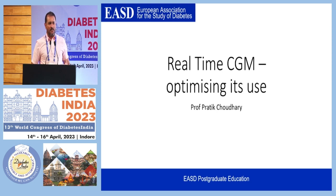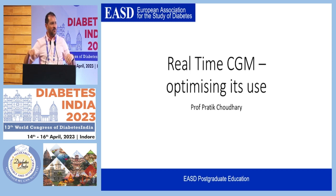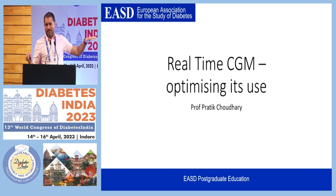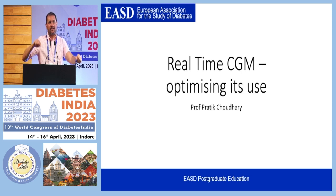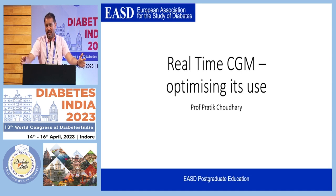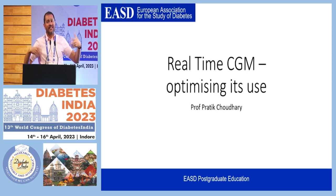A type 2 patient with good C-peptide has a stable profile — within three days you get a clear picture because it's reproducible. Someone with variable profiles — one behavioral, one physiological — I completely agree. But there's one other factor: how much residual C-peptide you have. The best marker of residual C-peptide without measuring it is duration of insulin therapy. Past five years of insulin therapy, C-peptide starts to come down and variability increases, as shown in DEVOTE data.